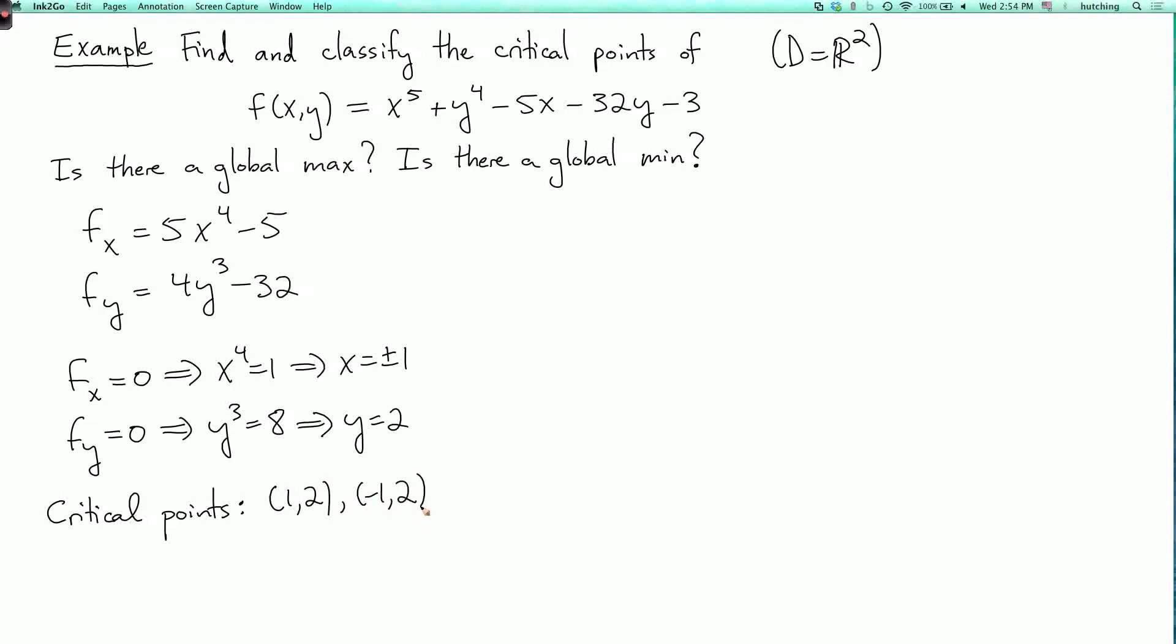Now let's figure out whether these are local minima or local maxima or neither. We need to use the second derivative test. fxx equals 20x cubed, fyy equals 12y squared, and fx has no y in it, so fxy equals zero.